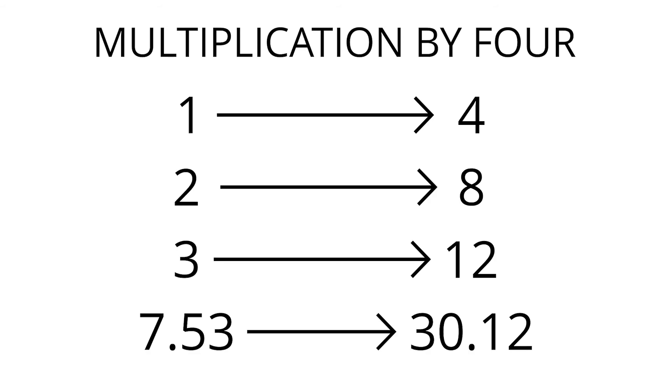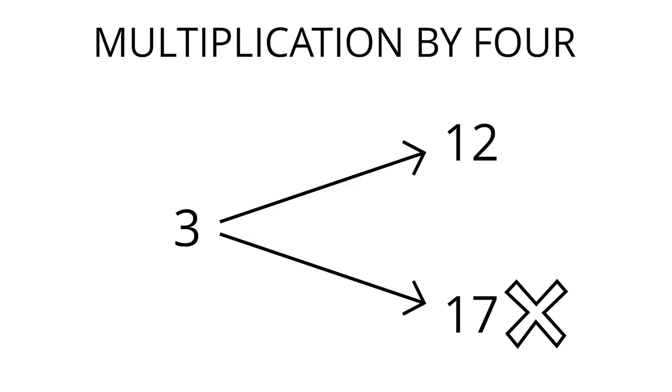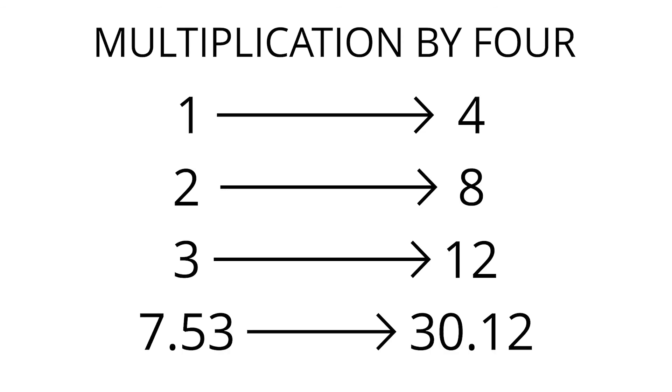That is, for any number, if we multiply the number by 4, we get one and only one result. We can't multiply a number by 4 and get two different answers, and we can't multiply two different numbers by 4 and get the same result. To get the inverse function division by 4, we simply reverse these arrows.